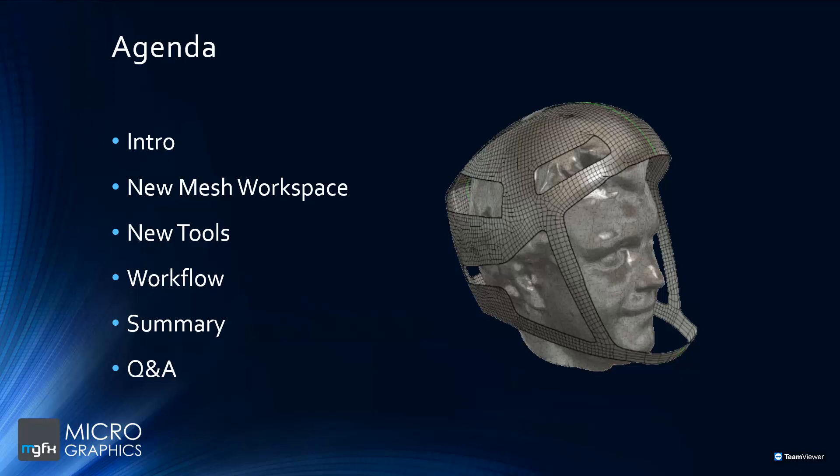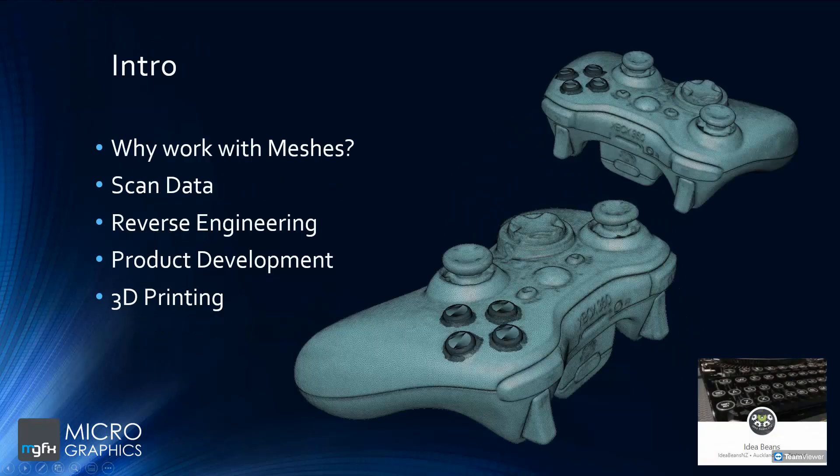Moving on to our intro — why work with mesh files? Why would you be needing to work with a mesh file inside of Fusion? There are various different reasons. I think some of the most common reasons nowadays would be to 3D print the file. 3D printing is becoming a big thing both for hobbyists as well as in industry. It's a nice quick way of rapid prototyping and quite quickly, cheaply, and easily creating a model for form, fit, and function studies.